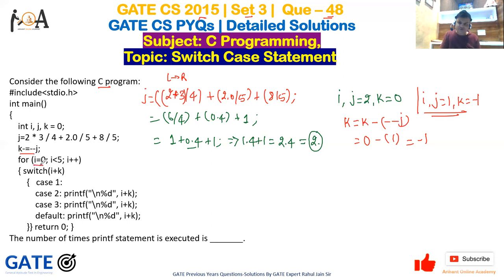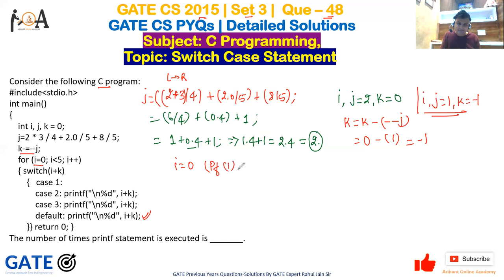Now the for loop: i = 0, and 0 is less than 5, so it's true. The switch evaluates i + k = 0 + (-1) = -1. The value -1 is not matched by cases 0, 1, 2, or 3, so the default statement runs. The printf statement prints once. Count = 1.